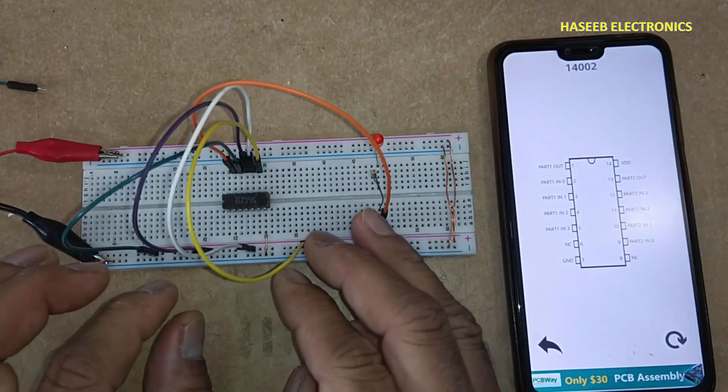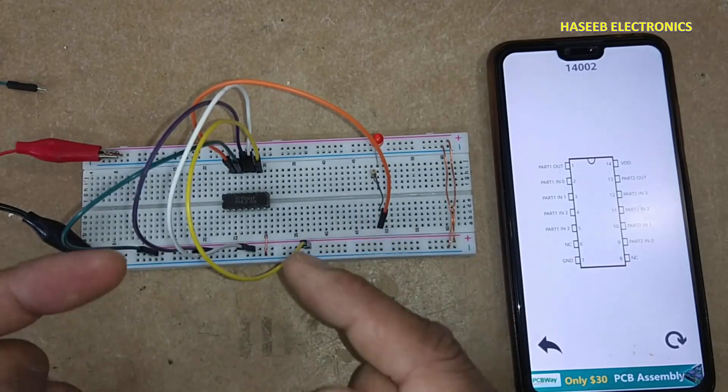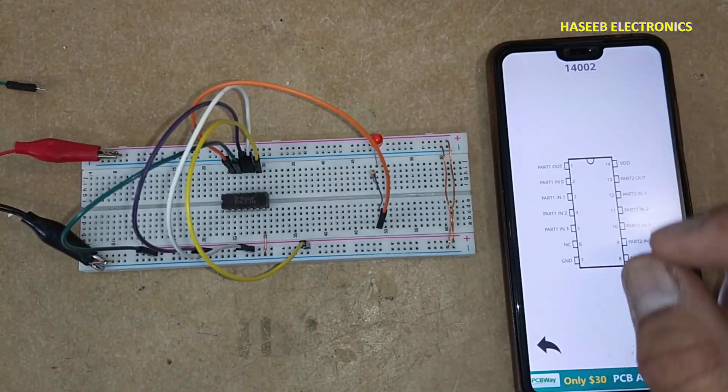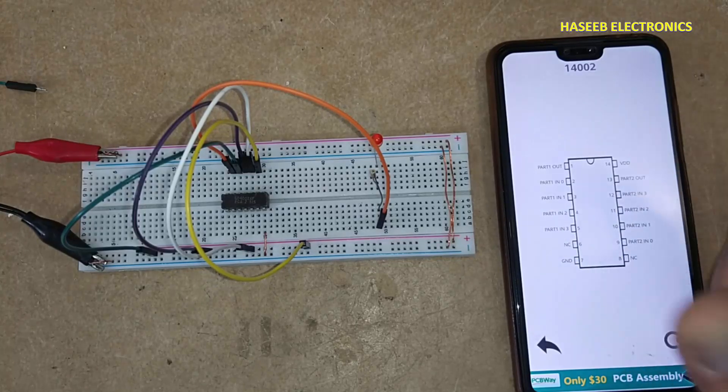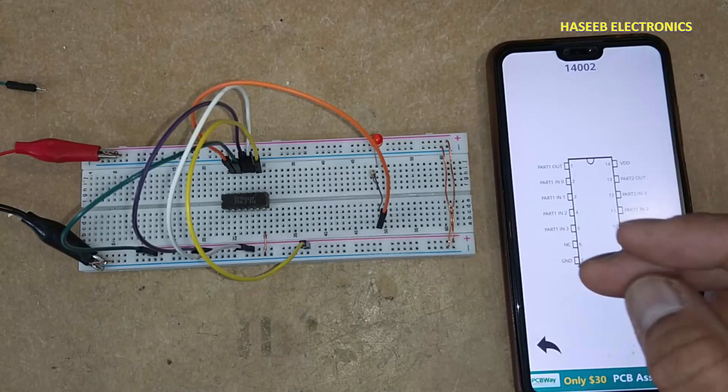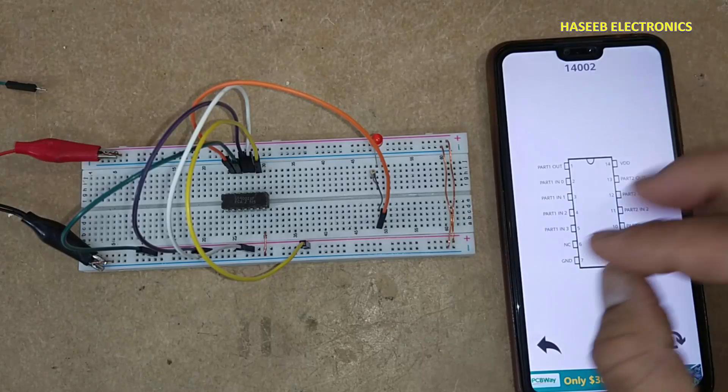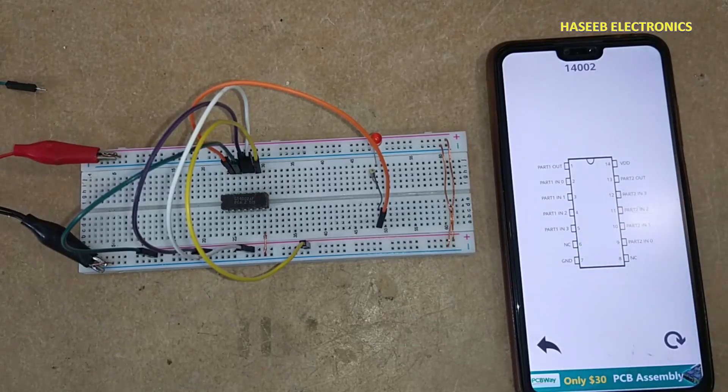Any one input high or all inputs high, output is low. This IC is a dual four-input NOR gate: two NOR gates, each with four inputs and one output. Thanks for watching. Assalamu alaikum.